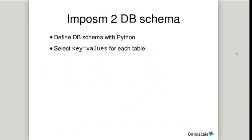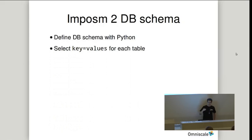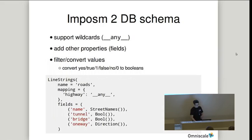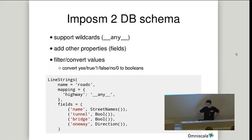With Impossum you can define the database schema with a Python mapping file, specifying which key-values should be imported into which table. For example, with this code snippet you can create a drinks table that creates point geometries for all nodes with the tag amenity=pub or amenity=bar. The mapping is quite flexible — you can use wildcards, say if you want to import all buildings or all highways. You can also add additional fields; in this case we store the name, tunnel, bridge, and oneway into the table.